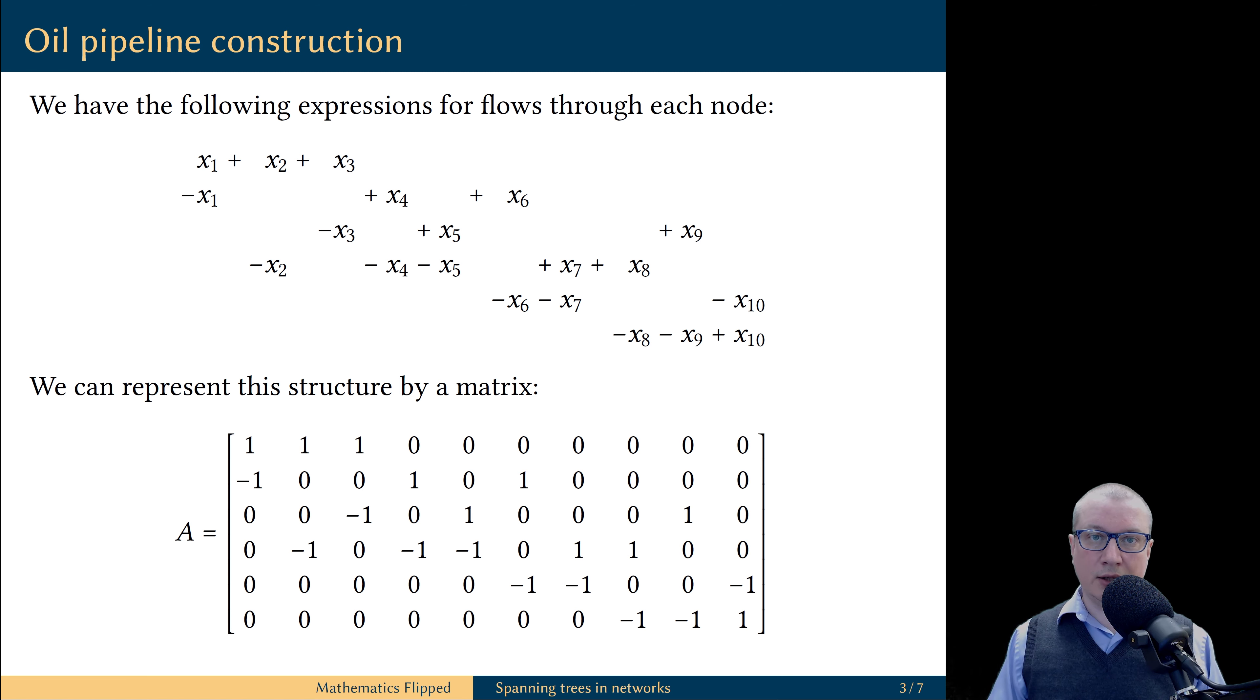It has one in position one, that means this is the flow into the node one, and it has negative one in position two. It means its flow out of node two.